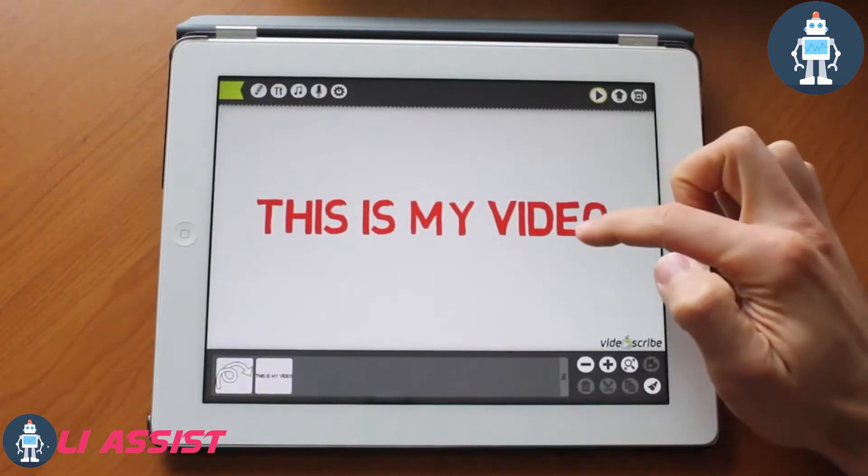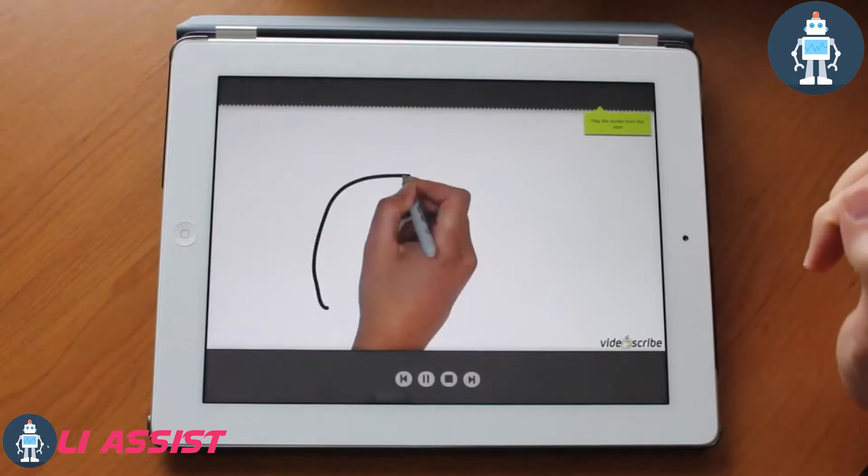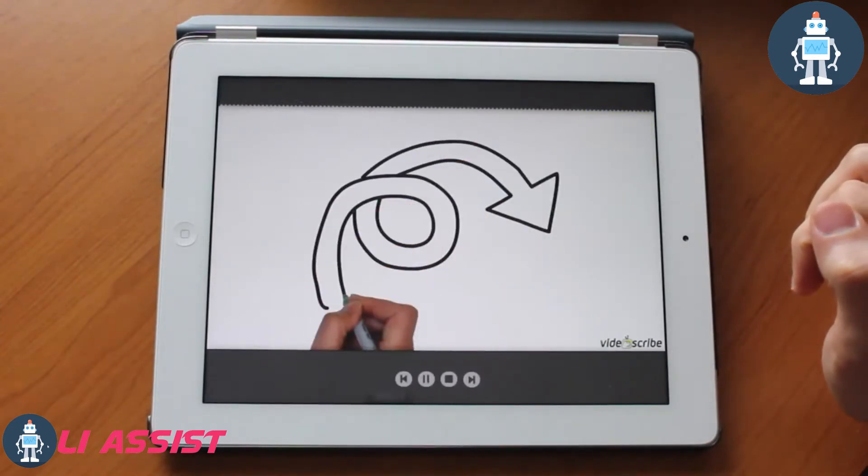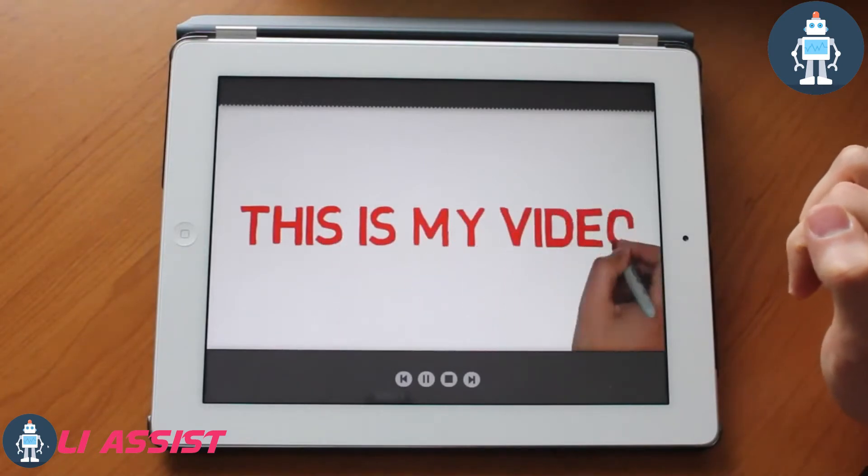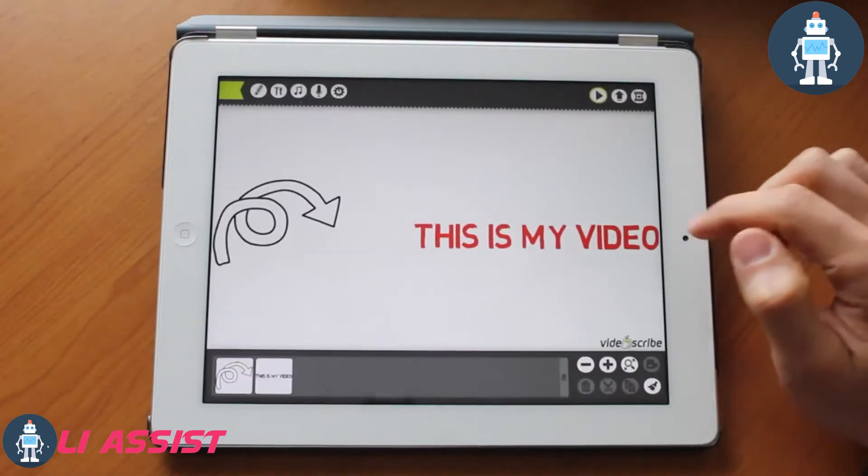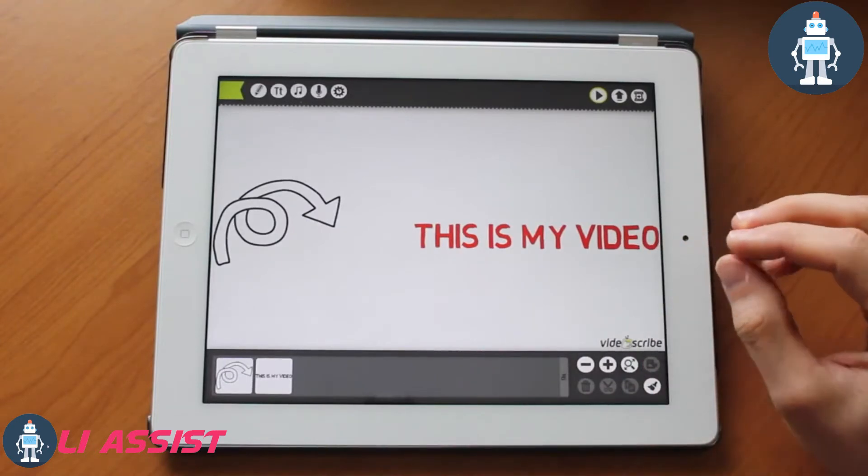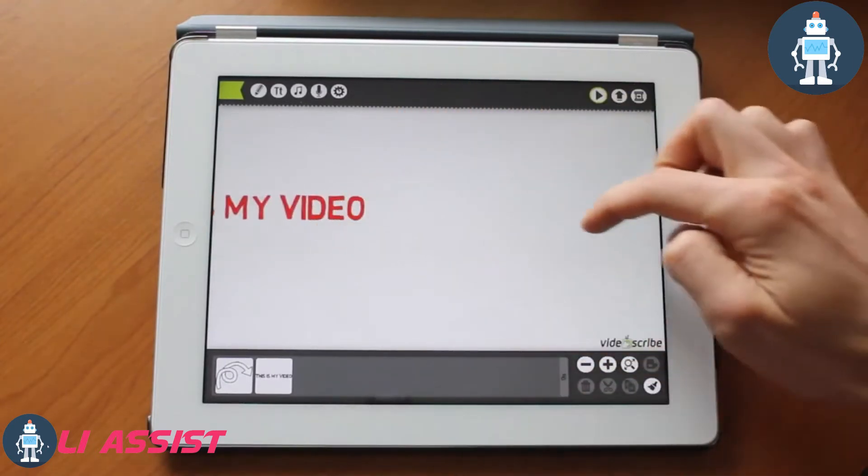If we play this now, you can see that the arrow takes four seconds to draw. After the arrow, the screen transfers over to the text and the text, just like the arrow, takes four seconds to draw. At the end of the video, everything will zoom out and you will see the entire picture.